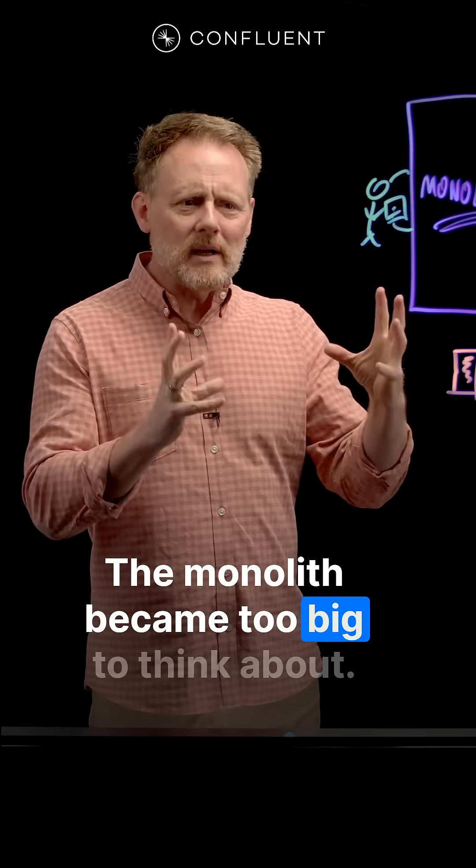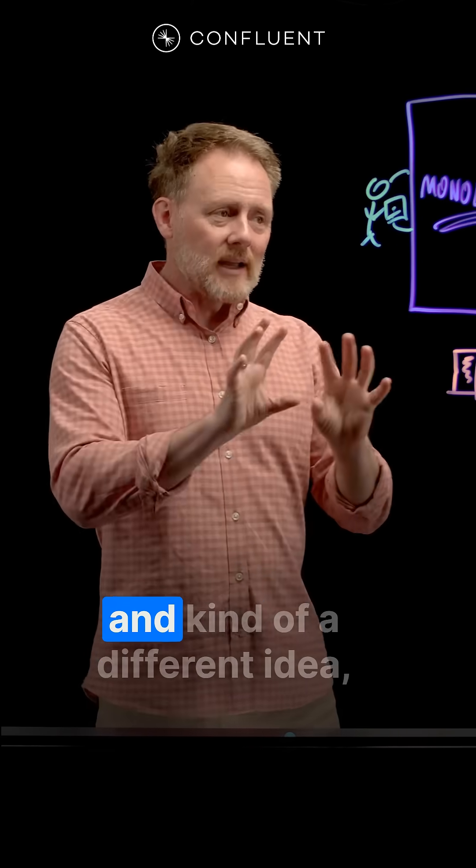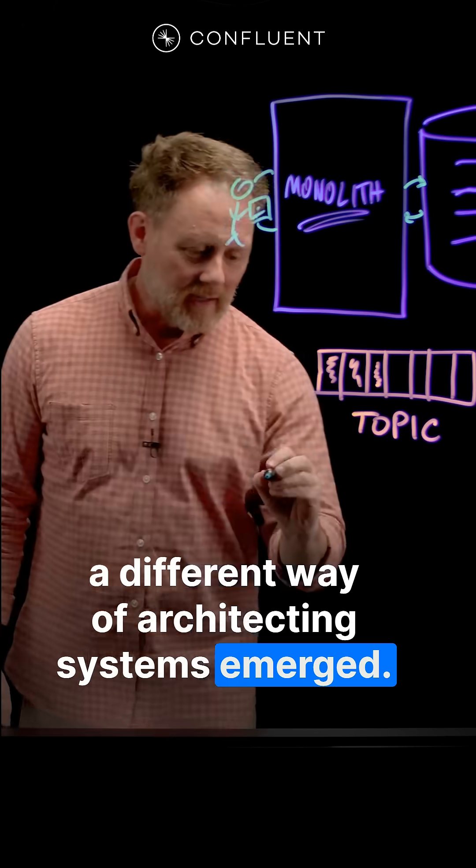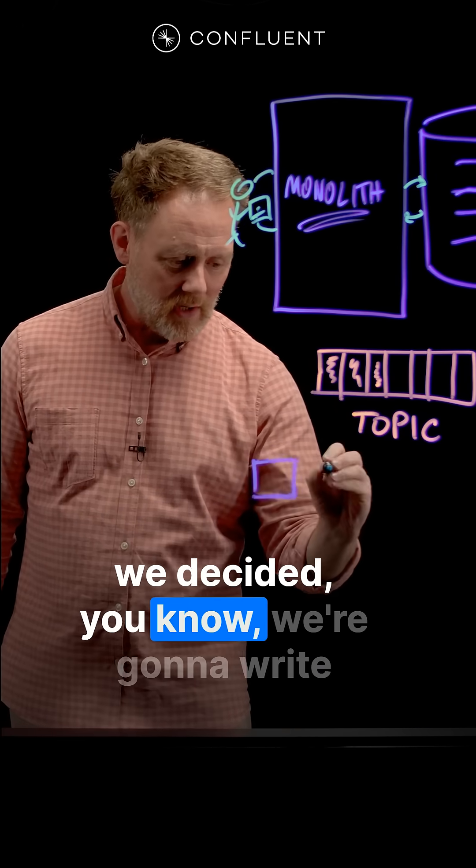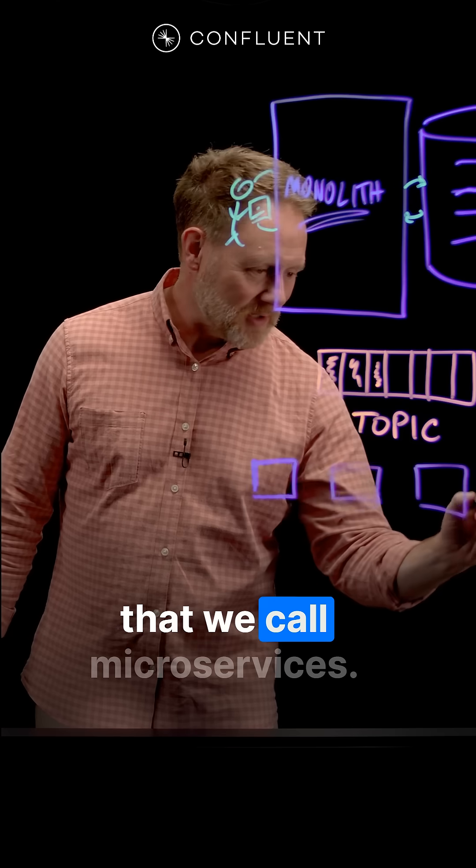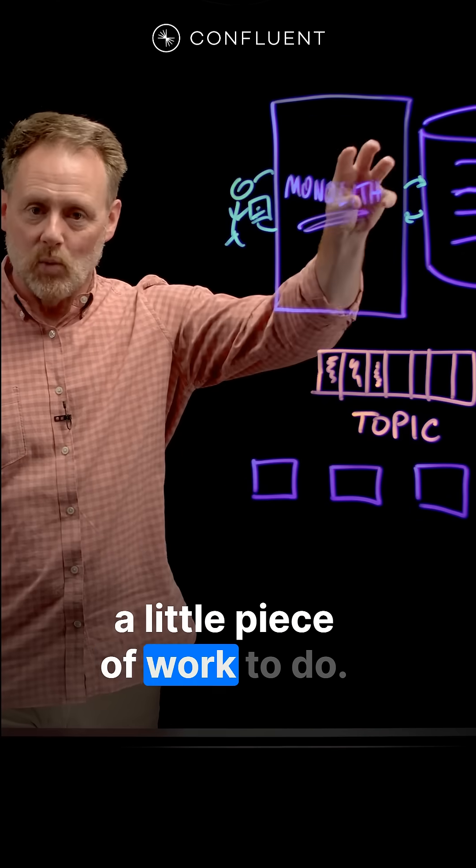The monolith became too big to think about. Developers had a hard time maintaining this big piece of software, and a different way of architecting systems emerged. And instead of this big giant program, we decided we're going to write a bunch of small programs that we call microservices. And each one of them has a little piece of work to do.